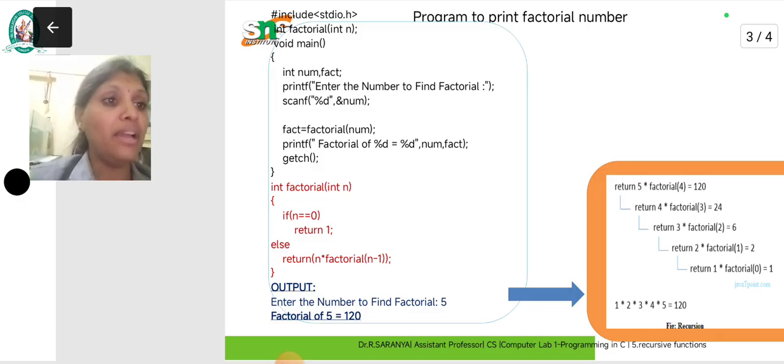So what we do here, you can see the output. Enter the number to find factorial. We can do any factorial. For example, 5. What is the answer? 120.